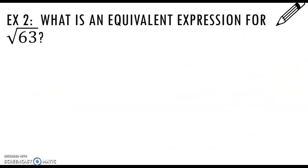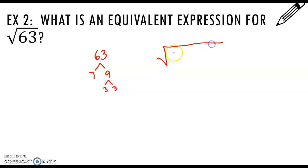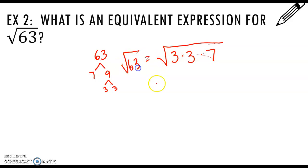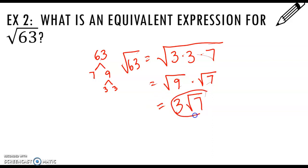You're also going to be asked to write equivalent expressions for radicals. If I'm doing the square root of 63, I'm going to make a factor tree for 63. 63 is 7 times 9, and 9 is 3 times 3. So the square root of 63 is the square root of 3 times 3 times 7, which is the square root of 9 times the square root of 7 — which equals 3 times the square root of 7.